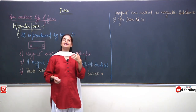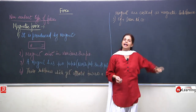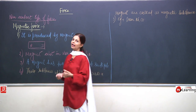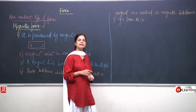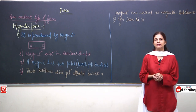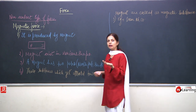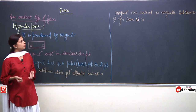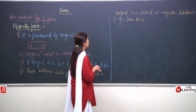So what substances does a magnet attract? Those are iron, nickel, and cobalt. That means iron, nickel, and cobalt are known as magnetic substances. Many things are around us, but only iron, nickel, and cobalt will be attracted towards the magnet, and so they are known as magnetic substances.